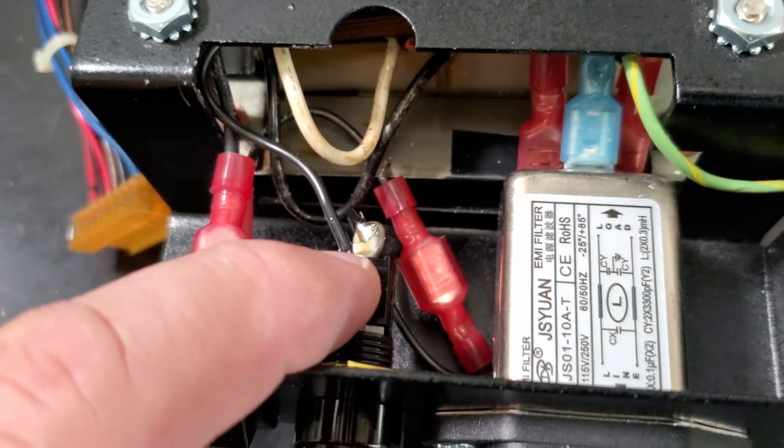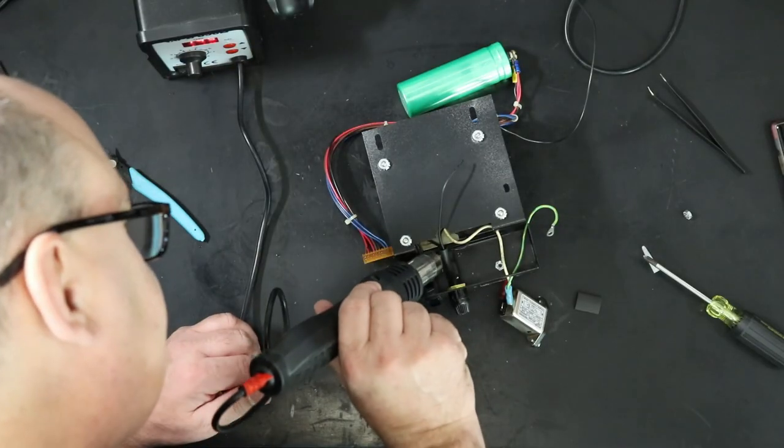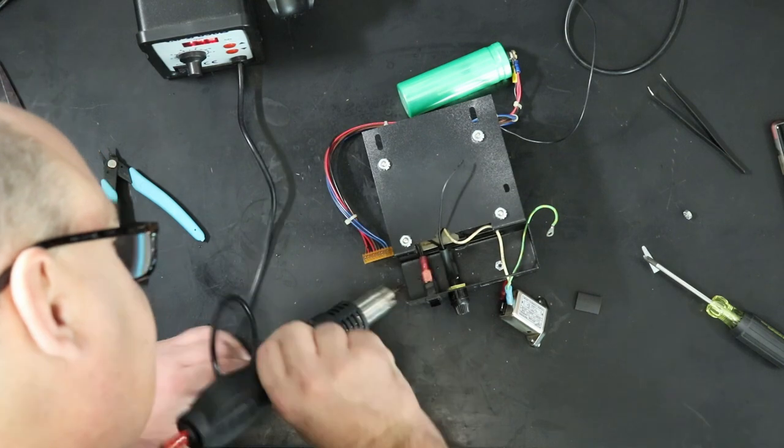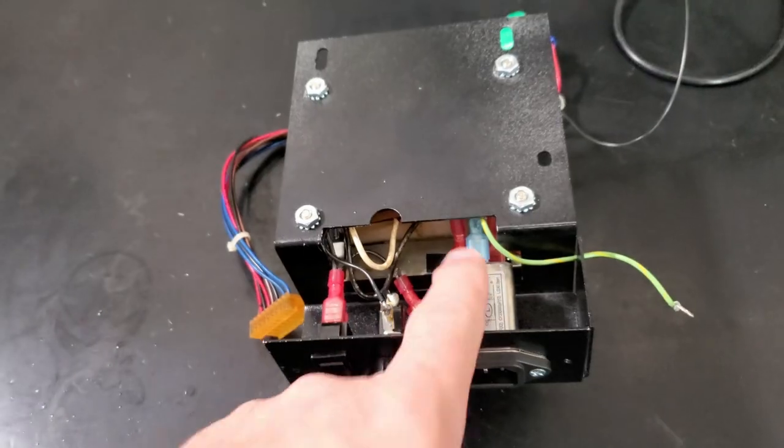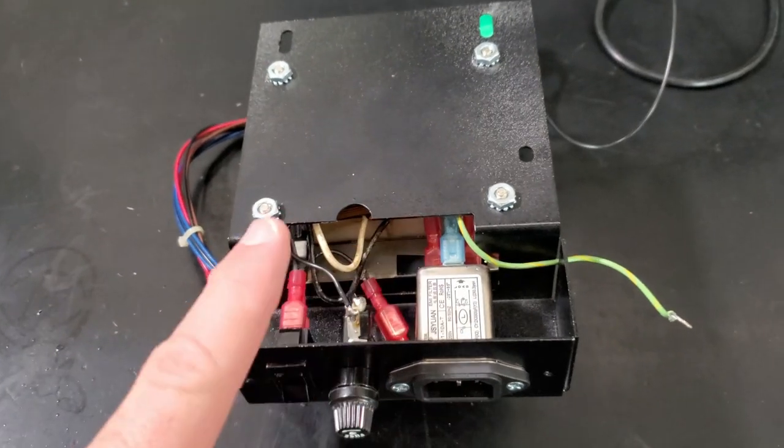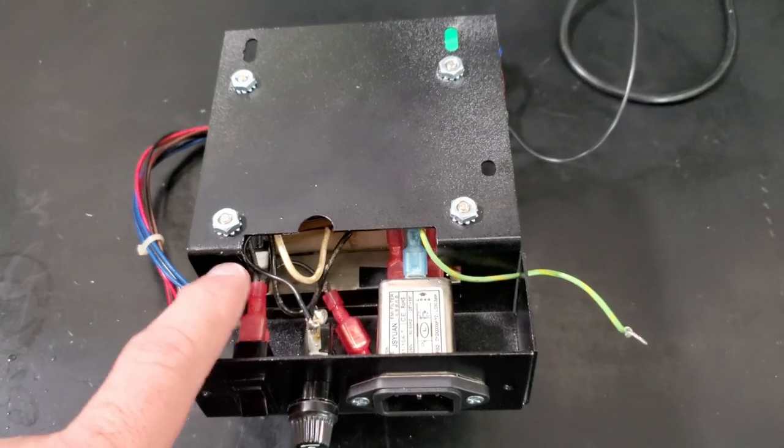Once that was done, I realized I had left the two solder connections on the fuse holder bare, which will not do since they'll be carrying line voltage. But it was a simple matter to add a couple pieces of heat shrink tubing since I had added spade connectors to the wires for easy removal in the future. It wasn't much of a future. That was like five minutes.